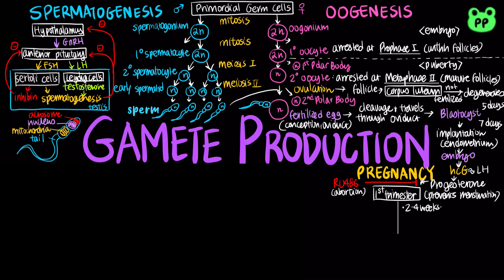During its first two to four weeks, the embryo obtains nutrients directly from the endometrium. Meanwhile, the trophoblast mingles with the endometrium and eventually forms the placenta. The first trimester is also the main period of organogenesis, or the development of body organs.